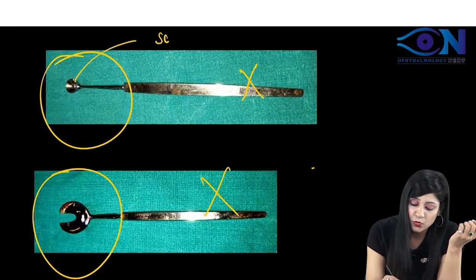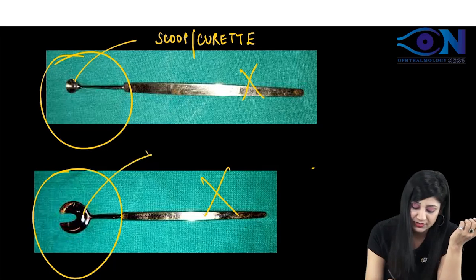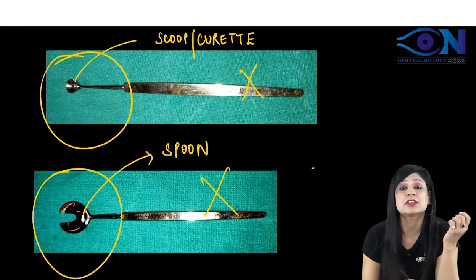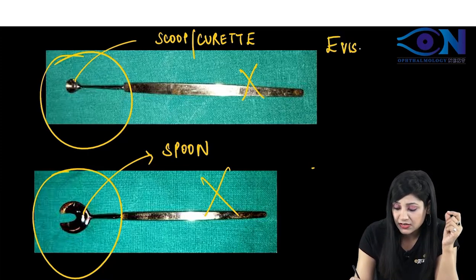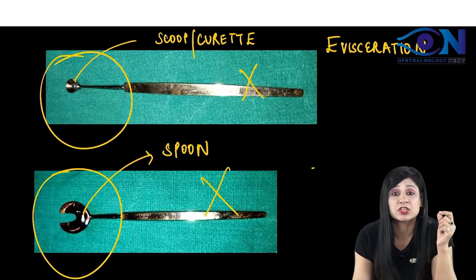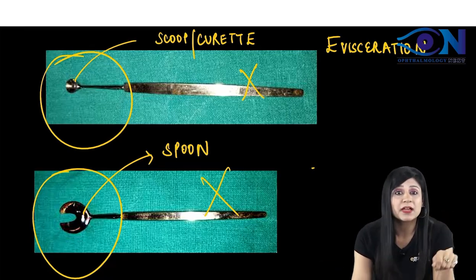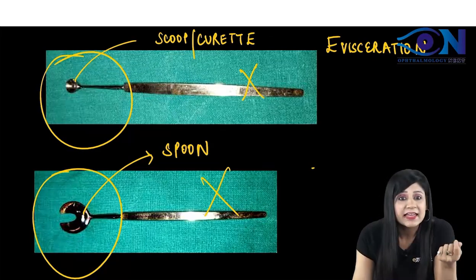This is actually the scoop or it is a curette, while if you look here, this is a spoon. The scoop or the curette is actually used for the evisceration. This is used for the evisceration. Evisceration means you are scooping out the contents from the eyeball, leaving the sclera behind.